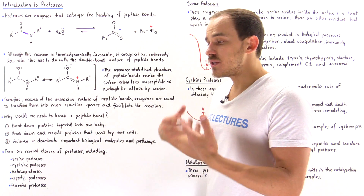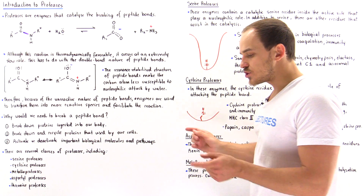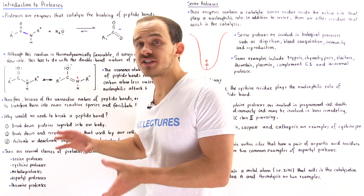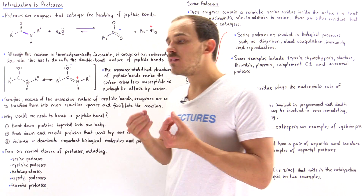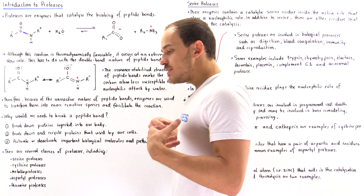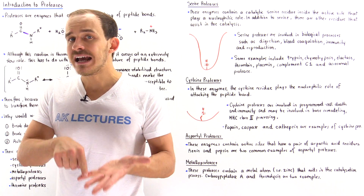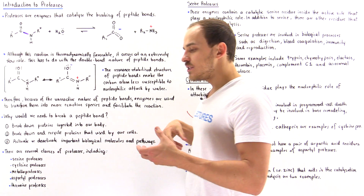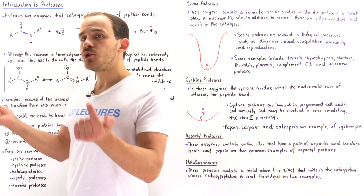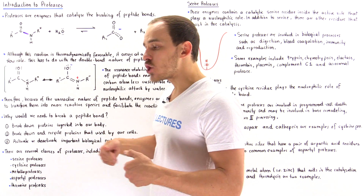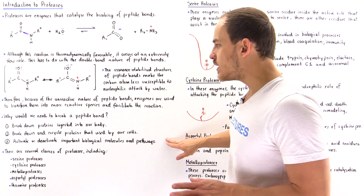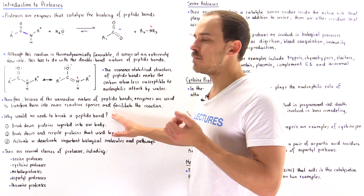Finally, as we'll discuss in more detail in the future, proteases are also used in proteolytic cleavage, which is used to activate or sometimes deactivate important biological pathways and molecules. For example, the digestive enzymes inside our stomach aren't always functioning, but once we ingest food, those enzymes are activated by proteolytic cleavage by other protease molecules. These are the three major reasons we need to break peptide bonds.